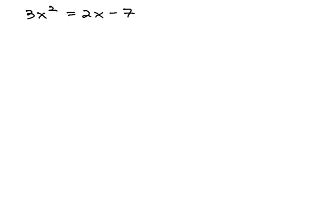When we're completing the square, we're trying to set up the equation so that we have something squared equals a number, because that's really easy to solve by taking the square root of both sides. But in order to get there, we have to do a little bit of setup work.